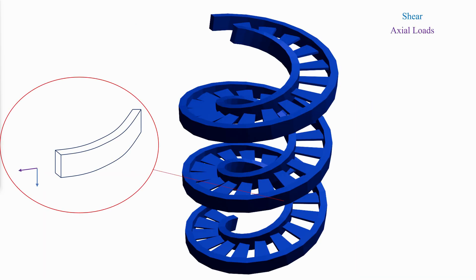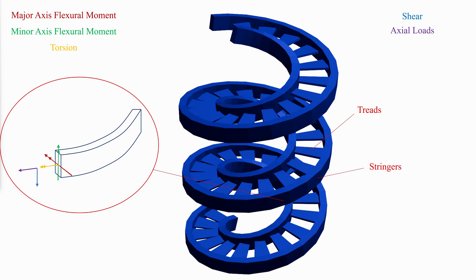In addition to shear and axial loads, helical members are subjected to biaxial flexure and torsion. A finite element model may be the best method to determine the required member loads. A conservative model can be obtained by neglecting the treads and modeling the stringers as independent spiral members. In many cases this will be extremely conservative, because the treads can provide significant torsional restraint to the stringer.